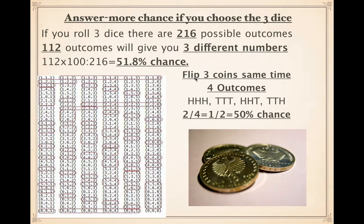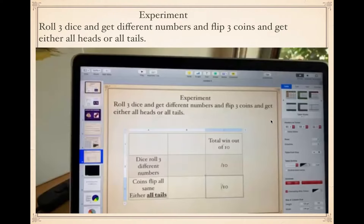When it comes to tossing three coins and getting all heads or all tails, we only have a 50 percent chance. There are four possible outcomes when you flip coins, and only two favorable outcomes — all heads or all tails. So you can see there's a higher chance of winning if you choose the dice. I did the experiment at home and every time the dice won. You can try this yourself if you have three dice and three coins.